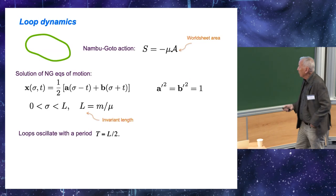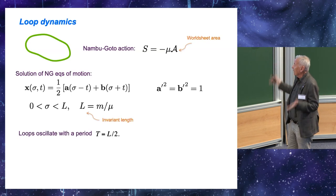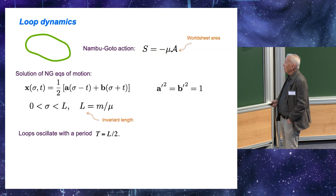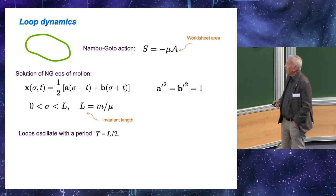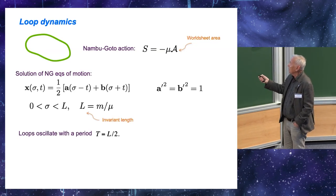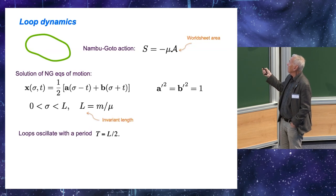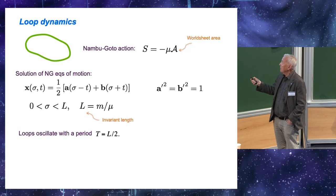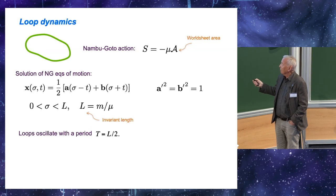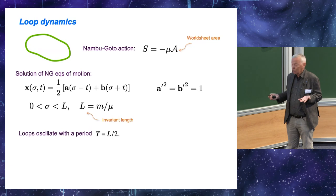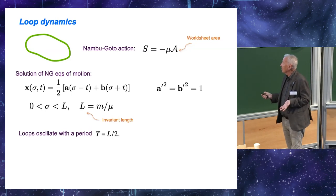The dynamics of strings is determined by the Nambu-Goto action, which is simply proportional to the world sheet area described by the string in spacetime. The solution of corresponding equations of motion is very simple. It's given by this, where A and B are two arbitrary vector functions, arbitrary except that they satisfy these constraints. Sigma is a parameter along the string and it varies between zero and L, where L is what is called the invariant length. It is just the mass of the loop divided by mu. This solution describes a loop which oscillates periodically with a period L over two.